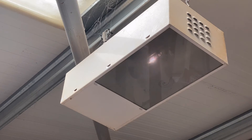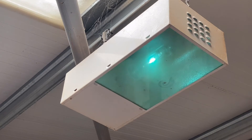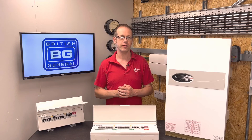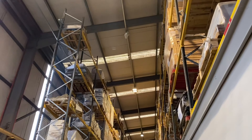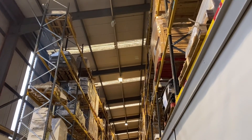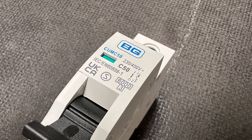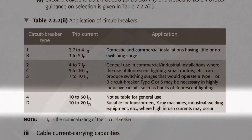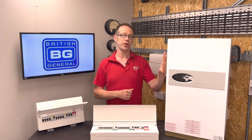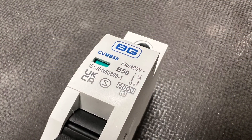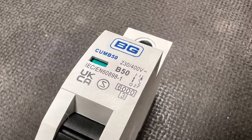Deciding which type to install comes down to the type of load being supplied. Loads like motors and certain types of lighting draw a large amount of current for a brief period when first turned on. A B type sees this as a fault and will disconnect the circuit even though there is no fault. Since C and D types are slower to respond to this large but very brief inrush current, they are less likely to trip on these loads. Guidance in table 7.272 covers which type protects which kind of load — C types for small motors and fluorescent or LED lighting, D types for highly inductive loads such as X-ray machines, large transformers, and welding machines. Because our electric boiler is a purely resistive heating load with no inrush current, we can use a B type MCB.